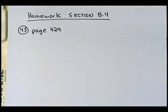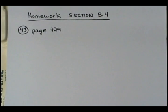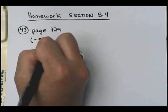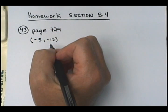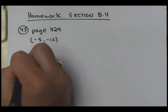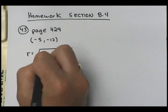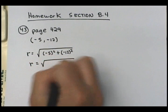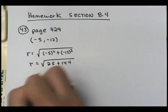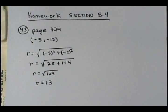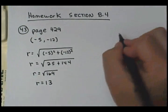What you're given here: it says convert from rectangular coordinates to polar coordinates. Our rectangular coordinates are negative 5, negative 12. So now what I need to do is find my r. We know r is the square root of x squared plus y squared. This is going to be the square root of 25 plus 144, which is the square root of 169. So r has to be 13.